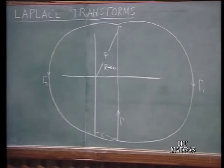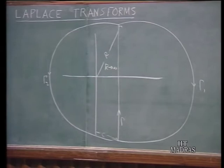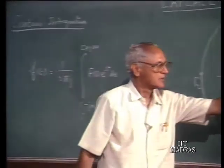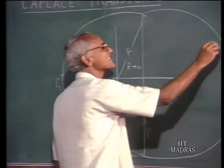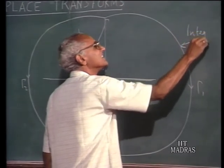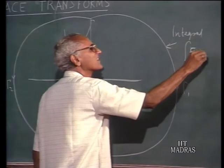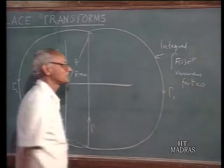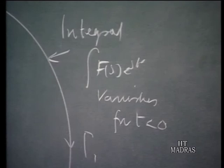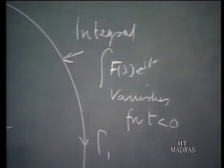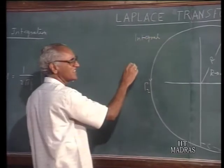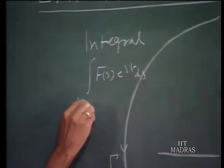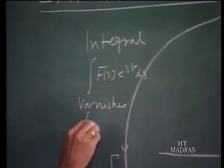It turns out that if you evaluate this integral around this contour, the integral of F(s) e^(st) vanishes along gamma 1 for t less than 0. On the other hand, if you take it along contour gamma 2, the integral of F(s) e^(st) ds vanishes for t greater than 0.